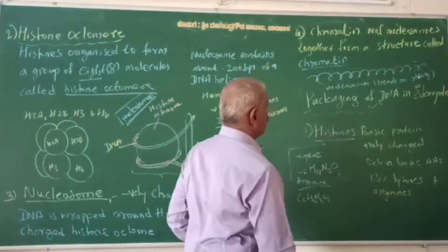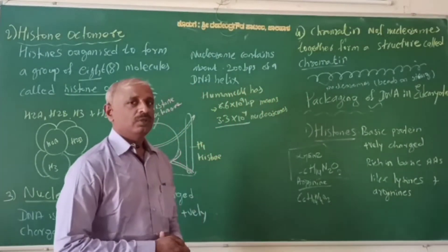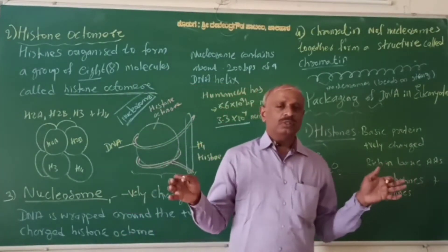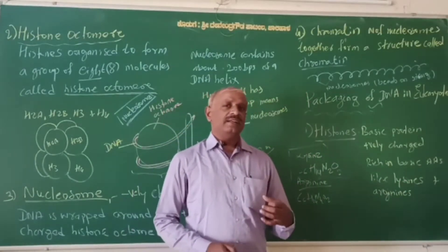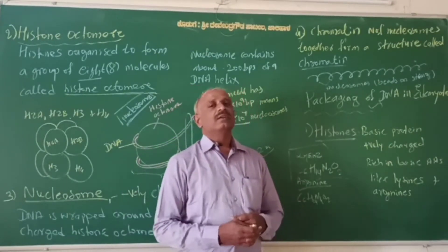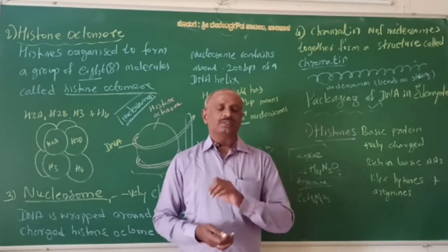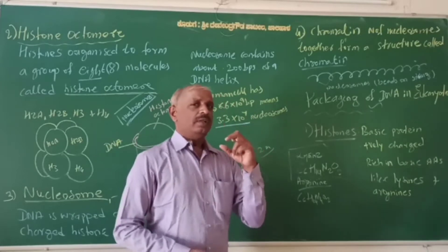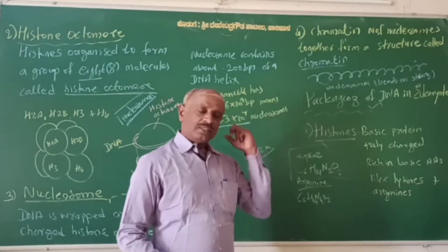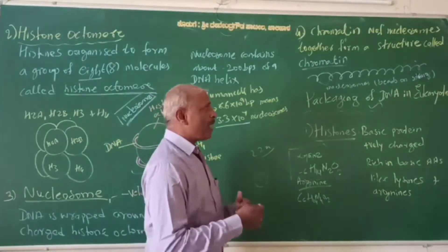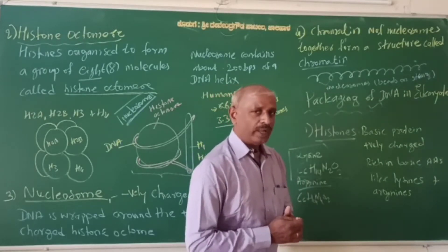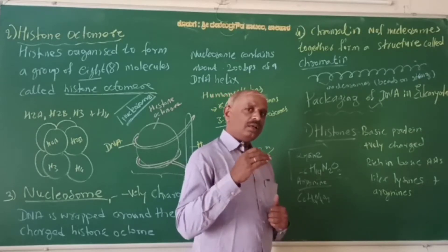Continuing with the packaging of DNA in eukaryotes - you know that the length of DNA in human beings is 2.2 meters. The cell itself is microscopic, and the nucleus is even smaller. Comparing it: the cell is like a stadium and the nucleus is like a football. So imagine how such a small nucleus contains 2.2 meters of DNA. This is the key question: explain the packaging of DNA in eukaryotic cells.